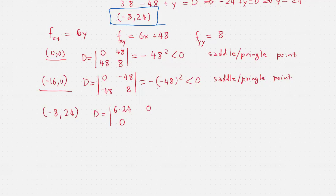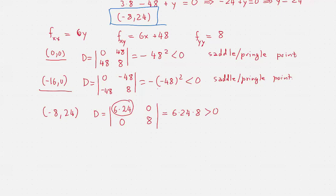Now we see that this is 6 times 24 times 8. Again, I have no immediate interest in finding this number. All I care about is the fact that it's greater than zero, which means we have a local extremum. Then I turn to f_xx at this point, which is positive. So f_xx at (-8, 24) is positive, and this implies that we have a local minimum.